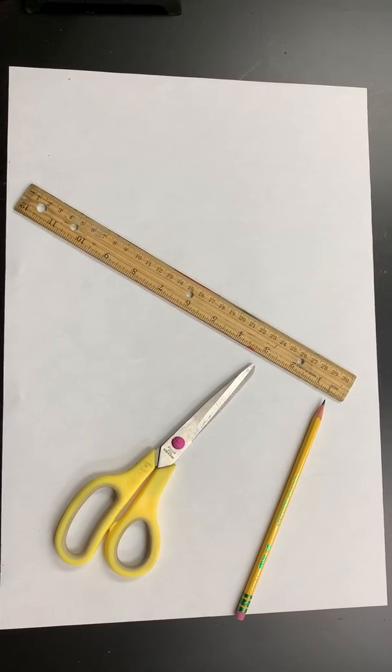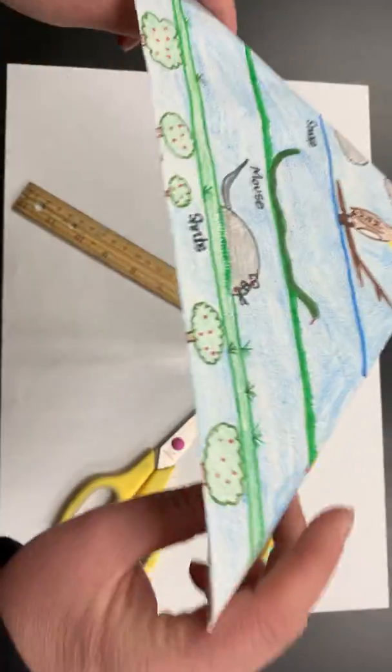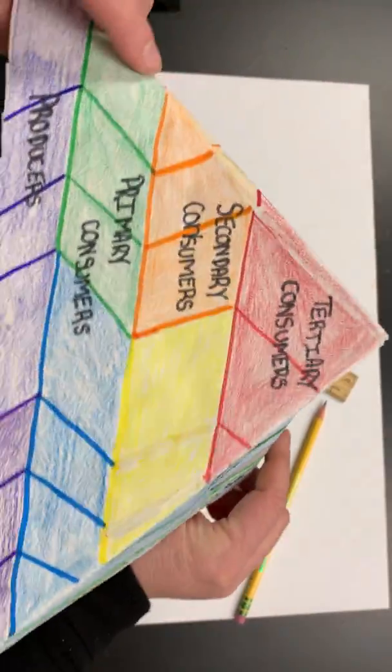All right, today we are going to create an energy pyramid, something like this, showing those trophic levels and the transfers of energy within an ecosystem.